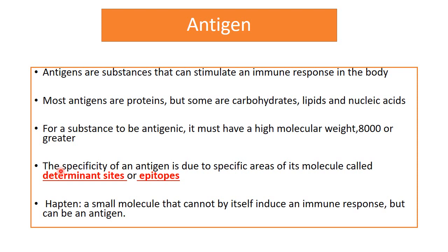Antigens are substances that can evoke an immune response in the body, and mostly they are proteins and polysaccharides. Their antigenicity depends upon regular recurrent molecular groups on their surface known as epitopes or determinant sites. For a substance to be antigenic, it must have a high molecular weight of more than 8,000. If the weight is smaller than 8,000, that substance cannot induce an immune response and is known as a hapten.